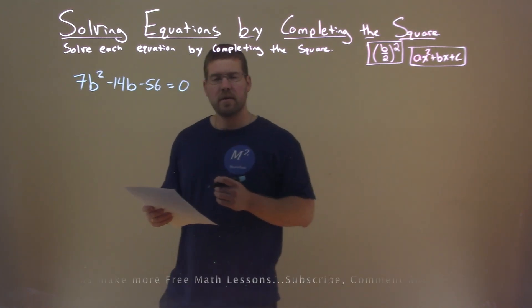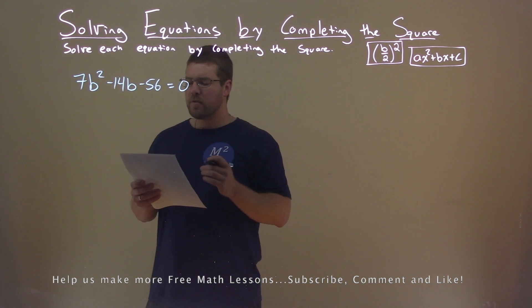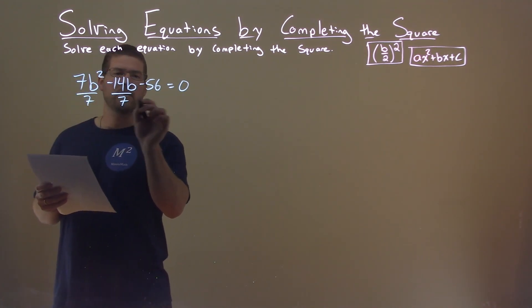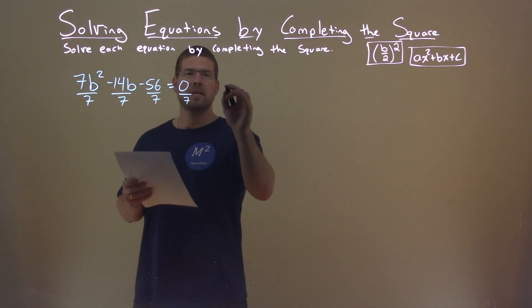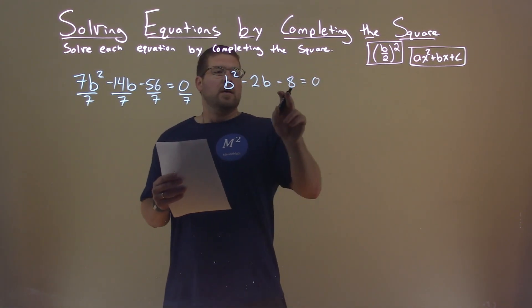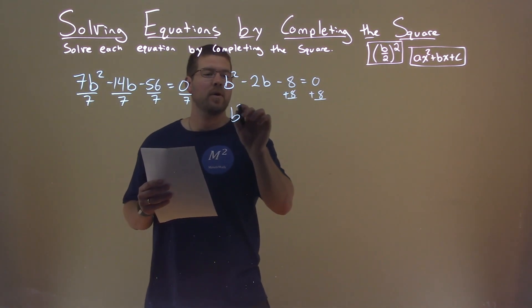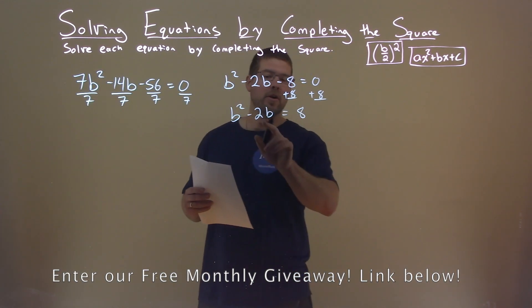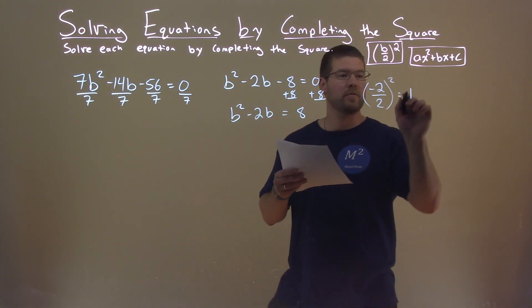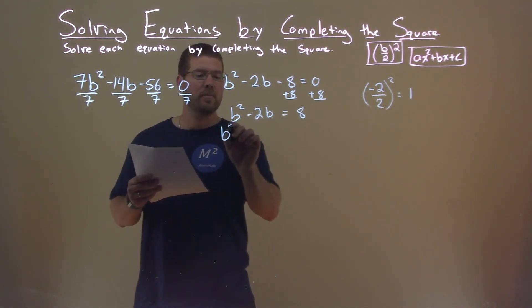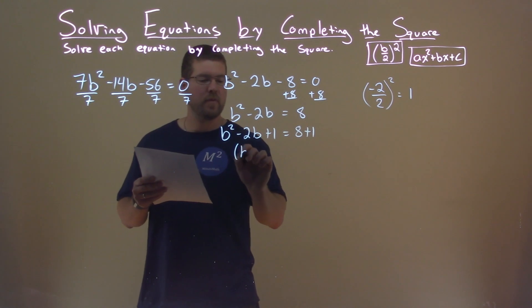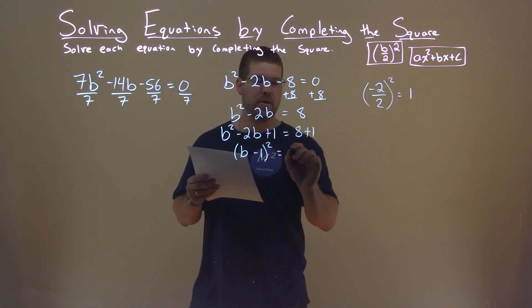We're given this problem right here: 7b squared minus 14b minus 56 equals 0. We want to solve this by completing the square. I don't like having an A value besides 1, so I'm going to divide all parts by 7 — that leaves me with b squared minus 2b minus 8 equals 0. Adding 8 to both sides: b squared minus 2b equals positive 8. Looking at the B value, negative 2 — divide by 2 and square it — gives a positive 1. Adding 1 to both sides: b squared minus 2b plus 1 equals 8 plus 1. The left-hand side is a perfect square — b minus 1, all squared — equal to 9.